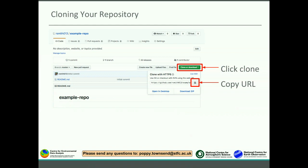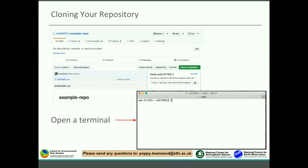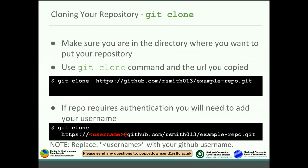We've created a repository on GitHub, and now you want to clone it to your local computer. You click the big green button that says 'Clone or download', and that will bring down the dropdown box. If you click that little copy icon in the corner, that will copy the URL. Then open a terminal window and use the git clone command, making sure you're in the directory where you want to put your repository, then type 'git clone' followed by the URL you just copied from GitHub.